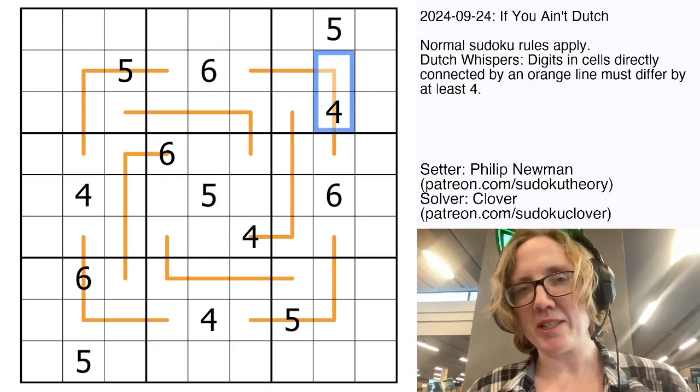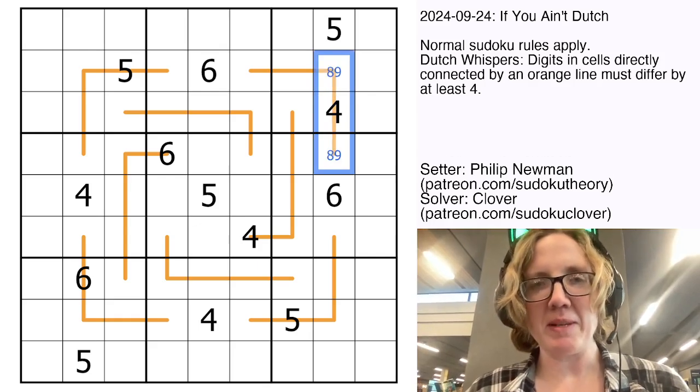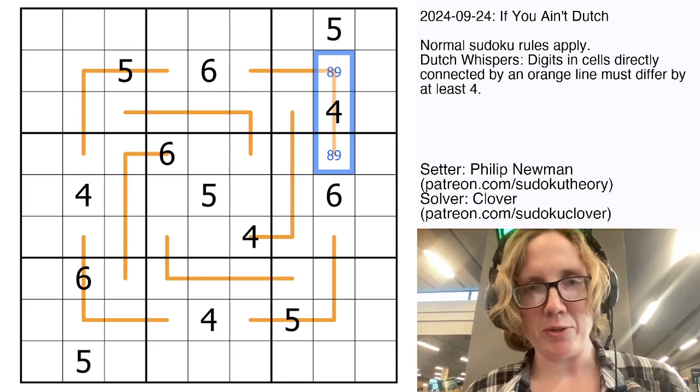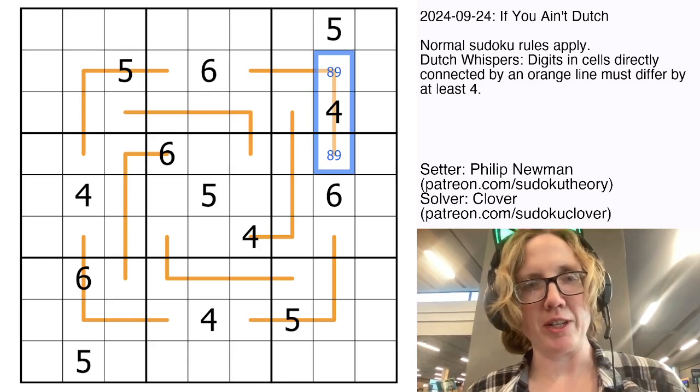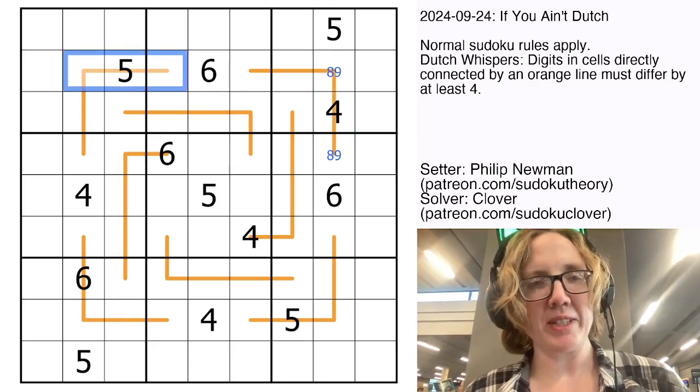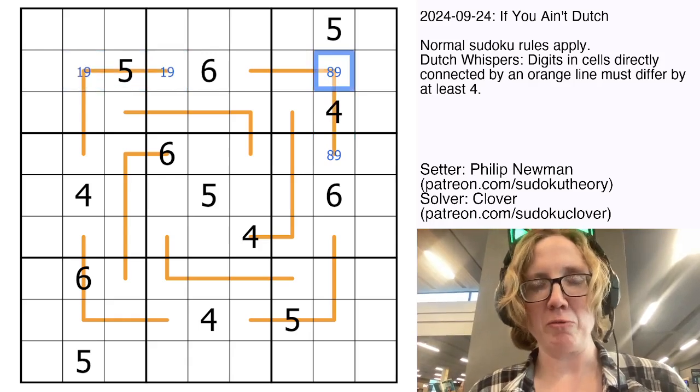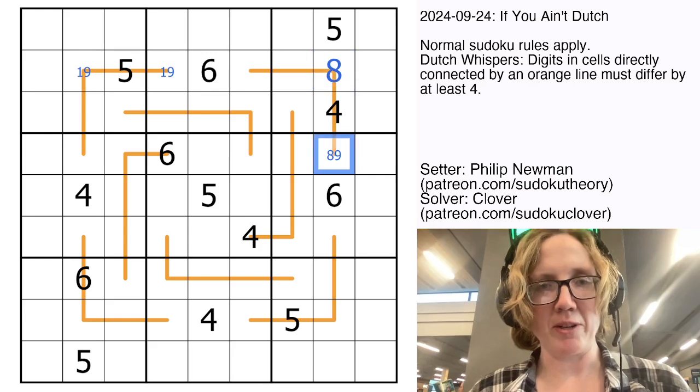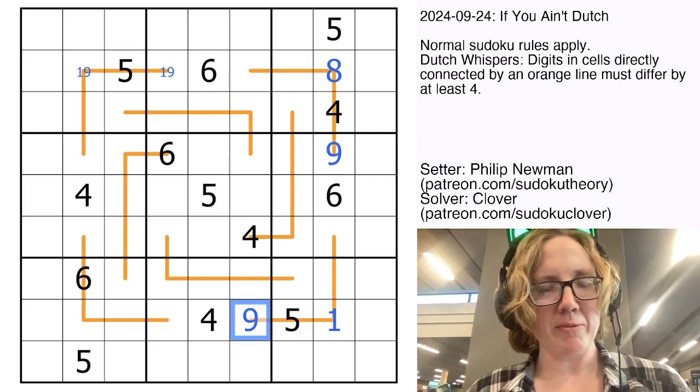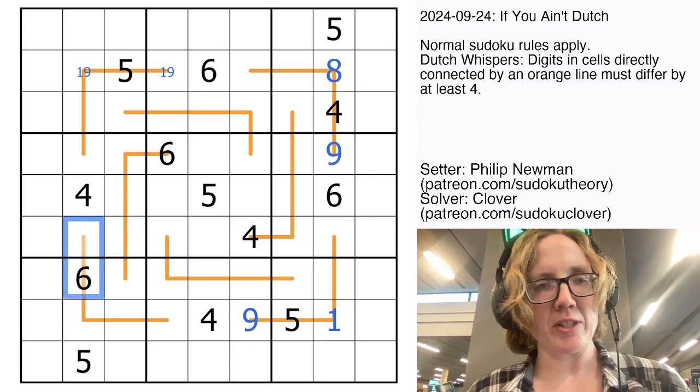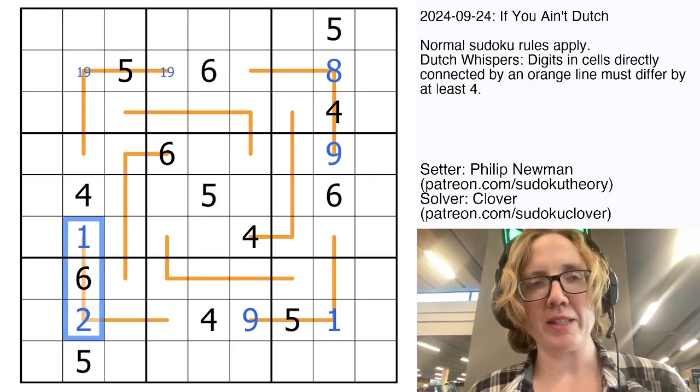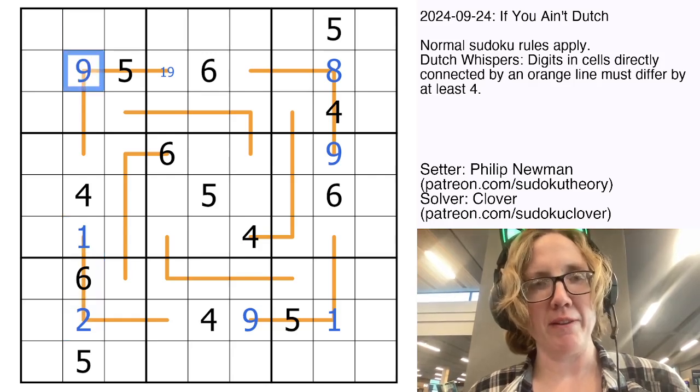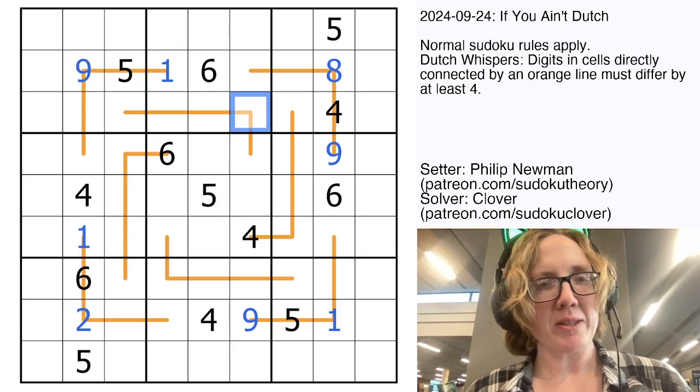So for instance the only digits that can ever be next to this 4 are going to be 8 and 9 because those are the only two digits that have a difference of 4 or greater with 4. Similarly the only digits that can ever go next to a 5 are 1 and 9, those are the only digits that are far enough away from 5. And we're going to jot down that. And finally 6, the only digits that are far enough away from 6 to place here are 2 and 1. All of the other digits are within 4 of 6.